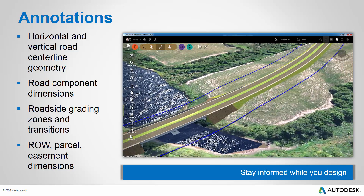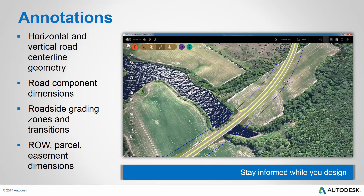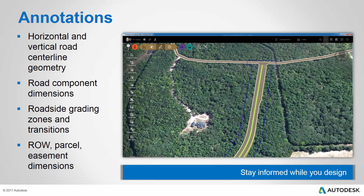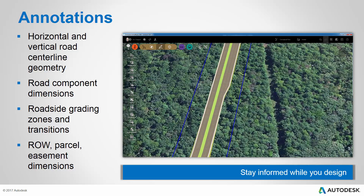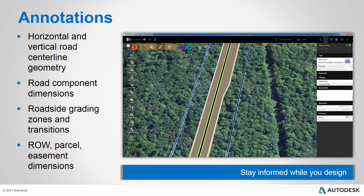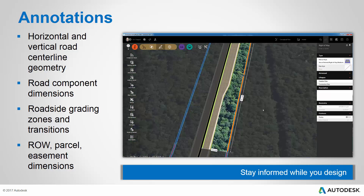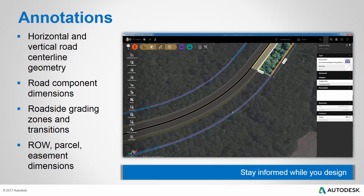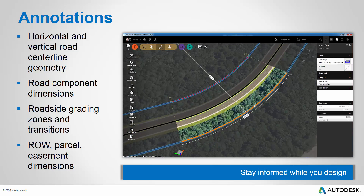And finally, if I have easements, right-of-ways, or parcels in my model, I can click on those objects to learn information about their dimensions. For example, if I click this tangent, I can see the length of the tangent as well as its offset from the road centerline. And if I click the curve, I can see its length, its radius, as well as the beginning and ending stations, and even symbols that indicate that it's tangent at either endpoint.